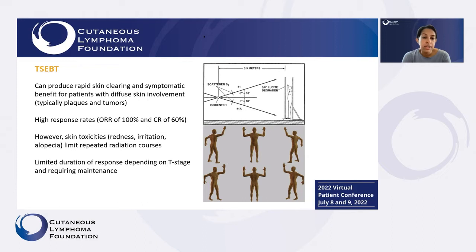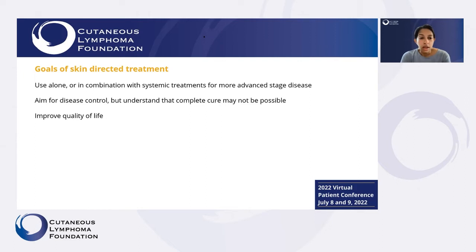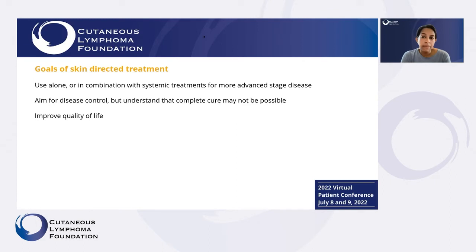Typically, TSEB can be used to get some initial clearing and then allow for maintenance to keep up the response in the skin. To summarize the goals of skin-directed treatment: they can be used alone or in combination with each other or with systemic treatments when patients have more advanced stage disease. The goal is to control the lymphoma. Unfortunately we may not be able to completely cure it, but our goal is to improve quality of life, prevent the spread of the lymphoma, and really treat the most bothersome spots and control the illness.